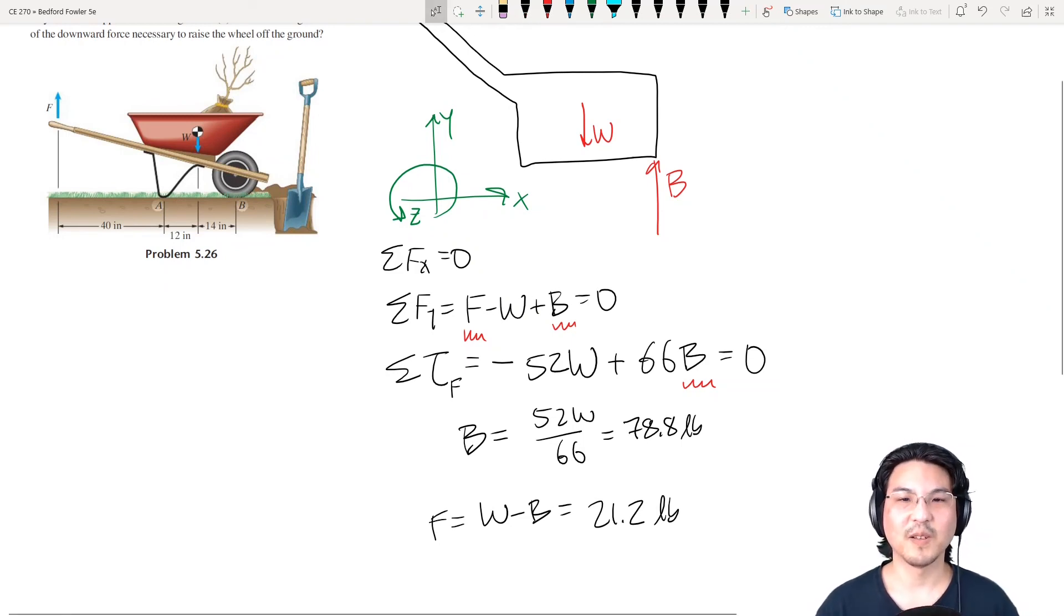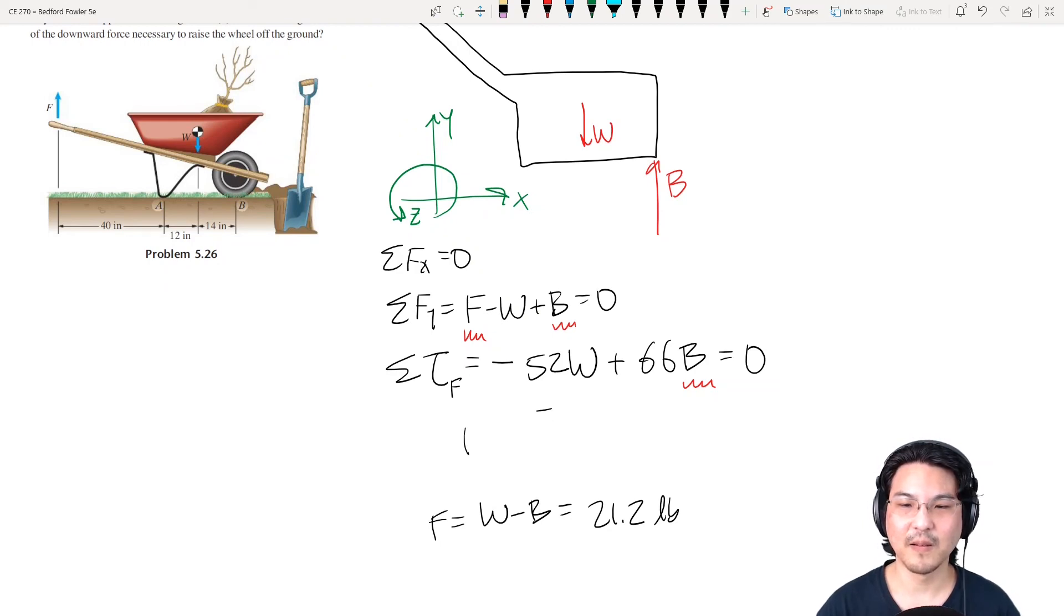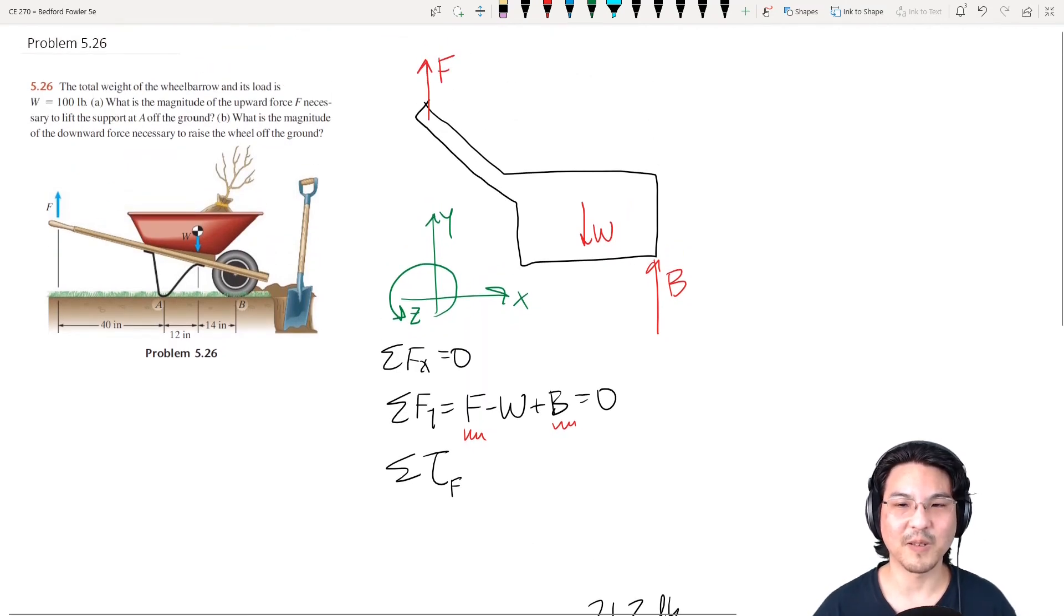Okay, so let me show you a different choice of that point for when you sum the torque. So instead of summing the torque about point F, what if we pick another point? Like, let's say we sum the torque about B over here. So let's give that a try.